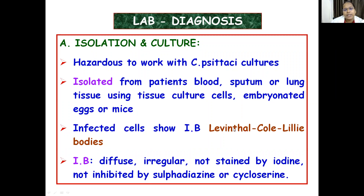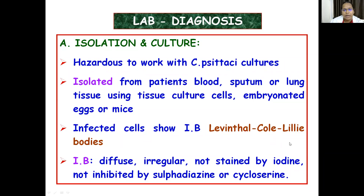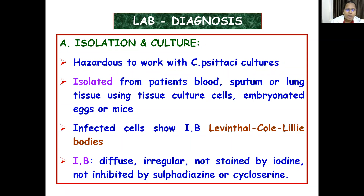To recap: in Chlamydia trachomatis, Lugol's iodine stains the inclusion bodies, called Halberstaedter-Prowazek (HP) bodies, whereas in Chlamydia psittaci we call them Levinthal-Cole-Lillie (LCL) inclusion bodies — an important exam point. The LCL inclusion bodies differ from those of C. trachomatis by being more diffuse, irregular, not stained by iodine, and not inhibited by sulfadiazine and cycloserine. Isolation should be attempted only in laboratories with special containment, as laboratory infection is a serious hazard.